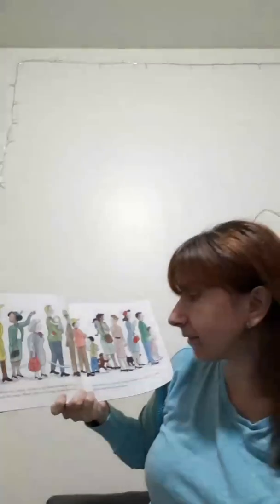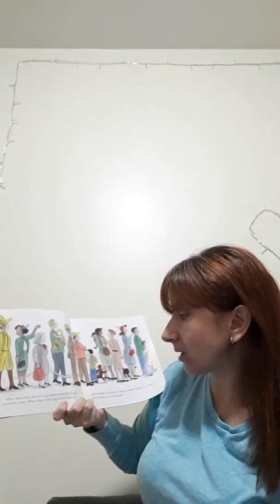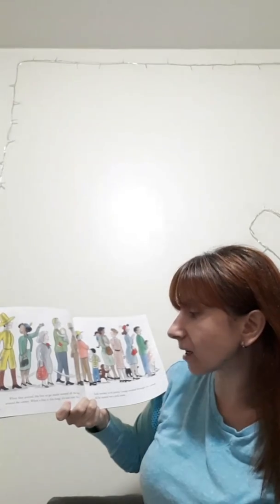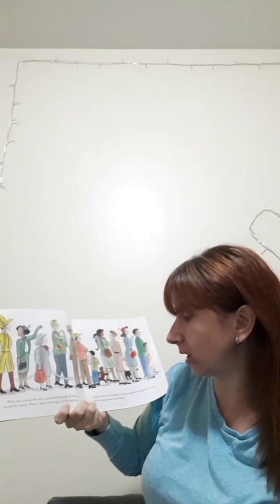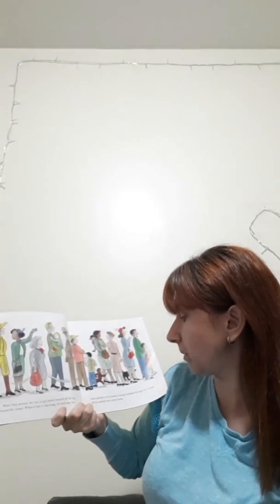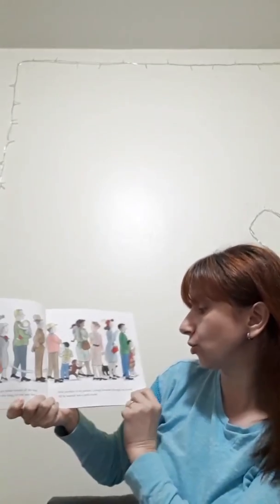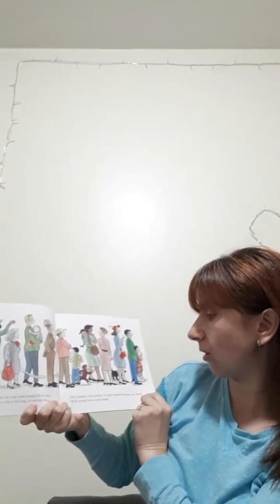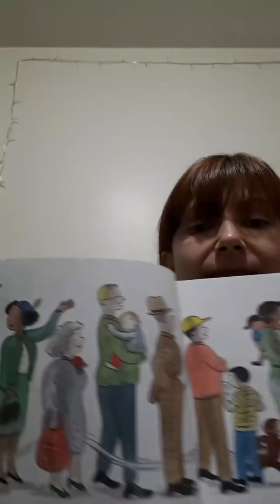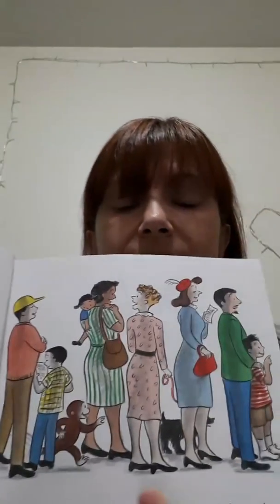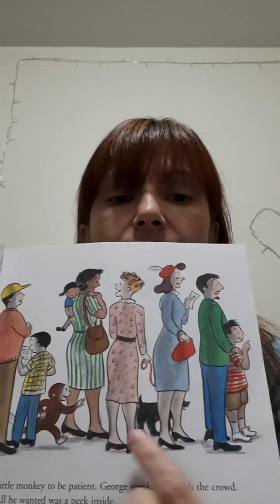When they arrived, the line to go inside went all the way around the corner. When a line is this long, it's not easy for a little monkey to be patient. George sneaked through the crowd. All he wanted was a peek inside.